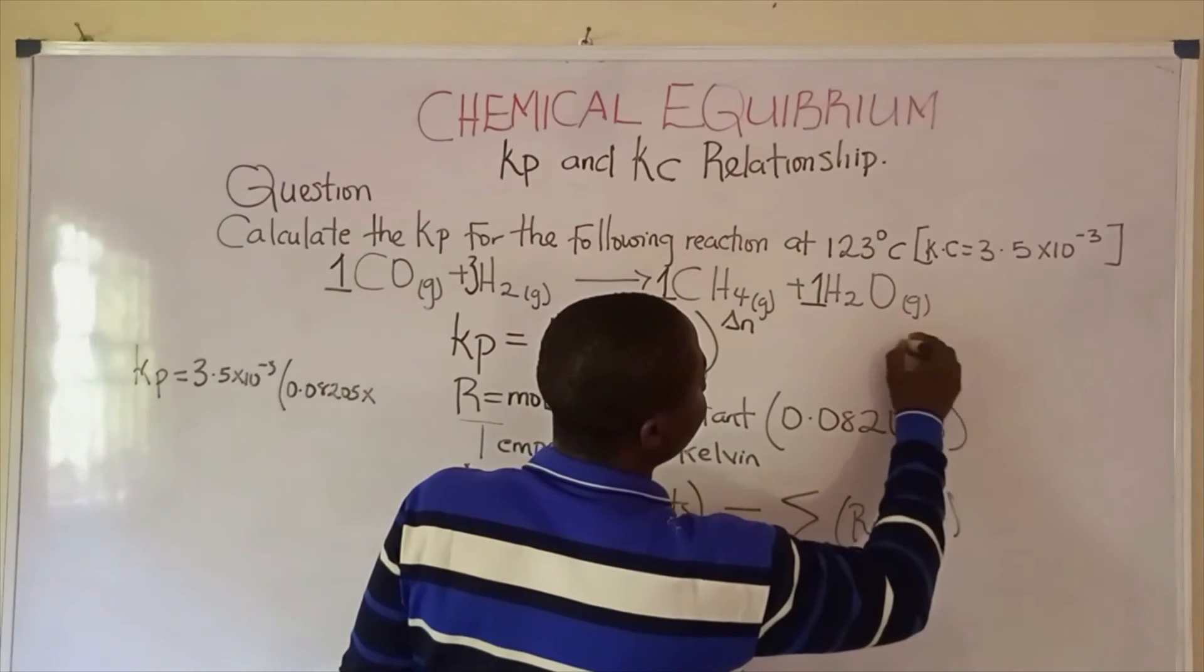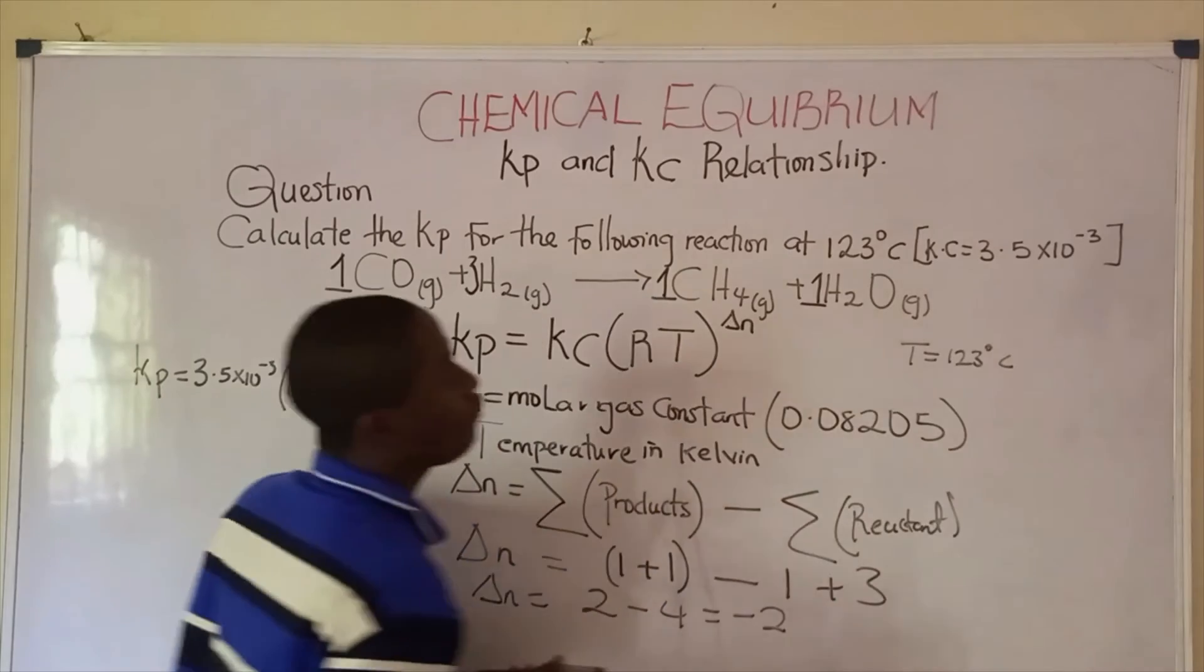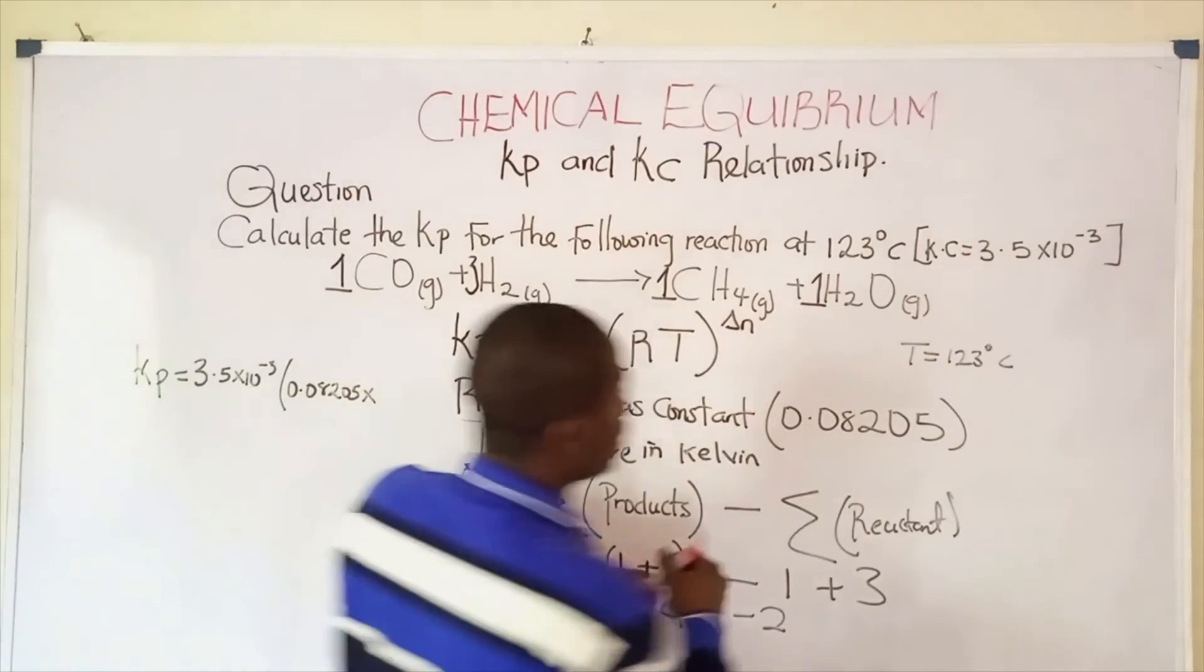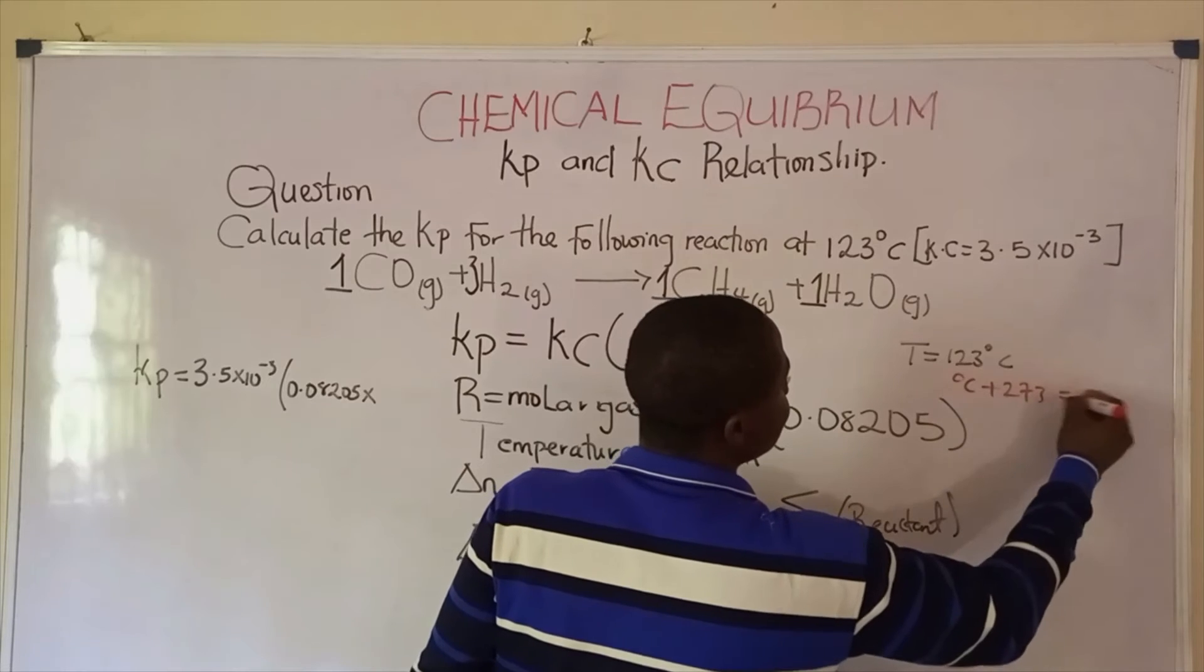The temperature given is in degrees Celsius, which is 123 degrees Celsius. So converting degrees Celsius to Kelvin, we simply use this equation: degrees Celsius plus 273 equals the Kelvin scale.